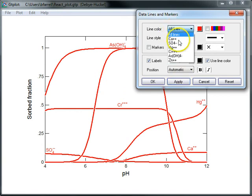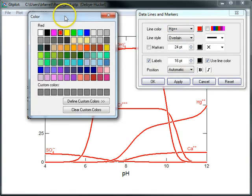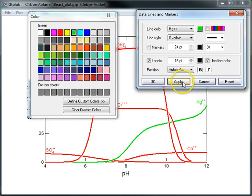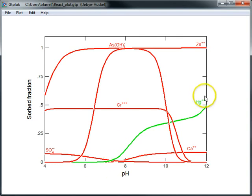So I'll choose Mercury, and I will set its color to green here. I'll click Apply, and say OK. And here we see that Mercury's color stands out clearly from the rest.